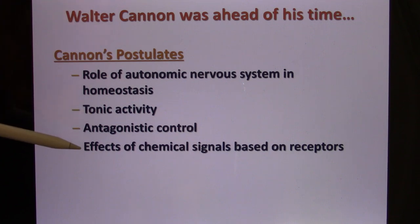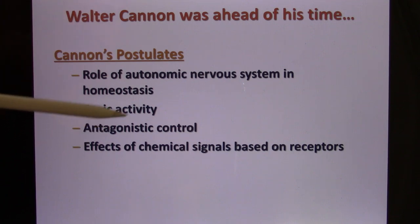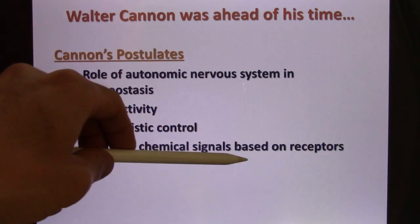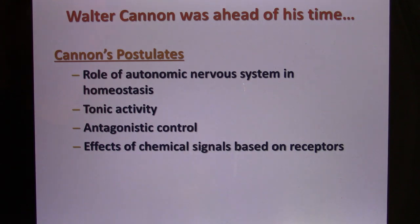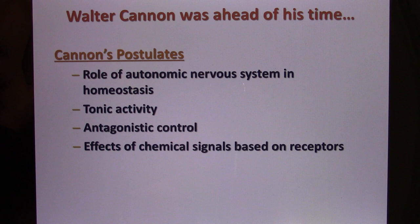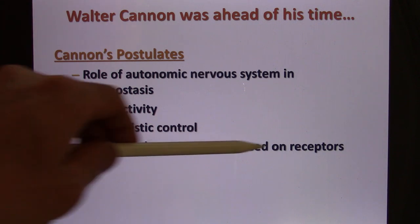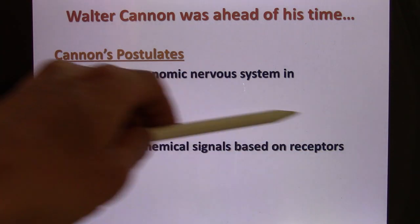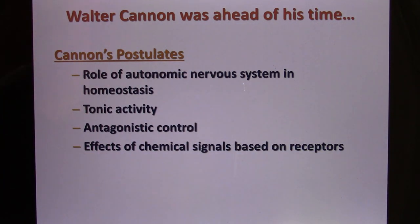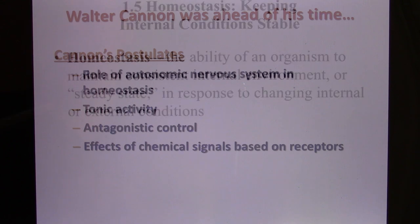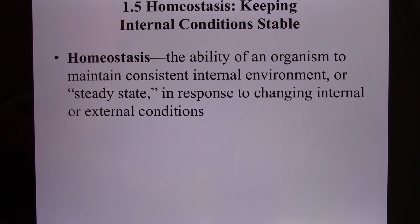Their effect depends on the receptor. They release different neurotransmitters, and how your organs know whether it's sympathetic or parasympathetic is because they use different receptors. That's what was predicted a hundred years ago. So now let's look at homeostasis.